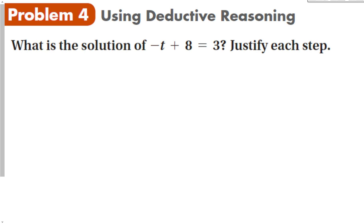Now we're going to look at something called deductive reasoning. When you use deductive reasoning, you must state your steps and your reason for each step using properties, definitions, or rules. In this problem, we're asked to provide reasons for each step using deductive reasoning — we have to justify each step. You'll see this a lot more when you get to geometry and do proofs.